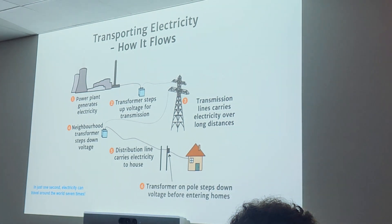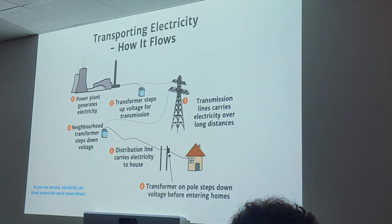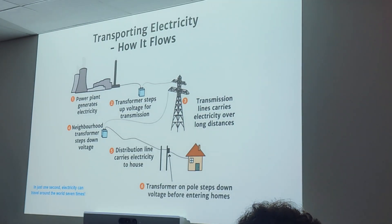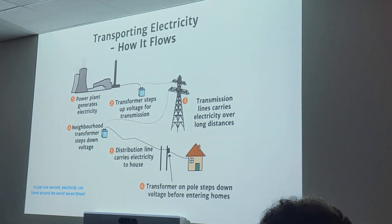In just one second, electricity can travel around the world seven times — it's very, very fast. What's the speed again? The speed of light. Is that why we can't see it? Because it's so fast — yes.